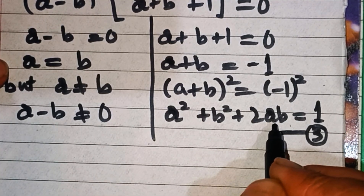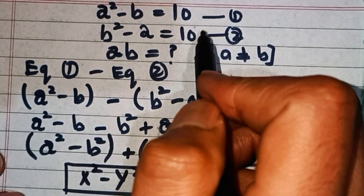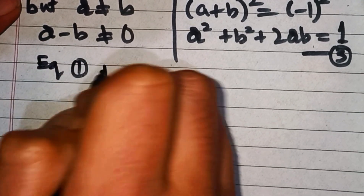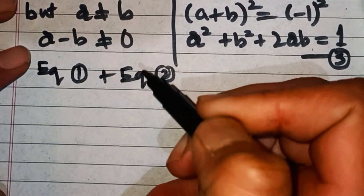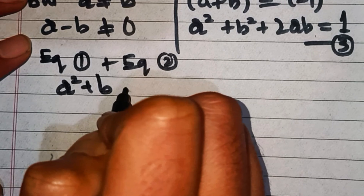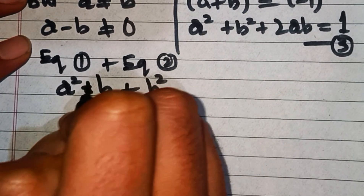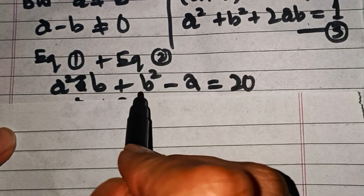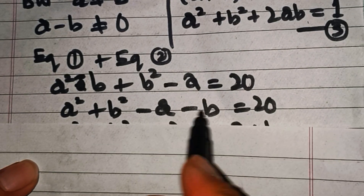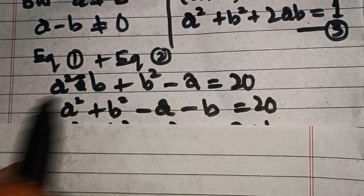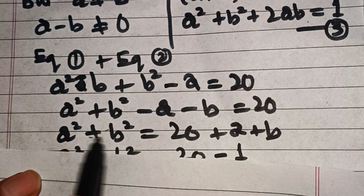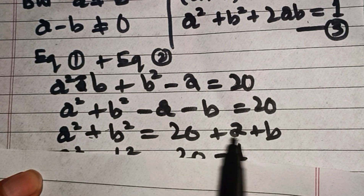Now in order to solve this equation we'll add equation one and equation two. Adding them: (a² - b) + (b² - a) = 20. This simplifies to a² + b² - b - a = 20. Moving -a - b to the right hand side: a² + b² = 20 + a + b.